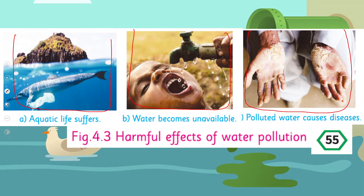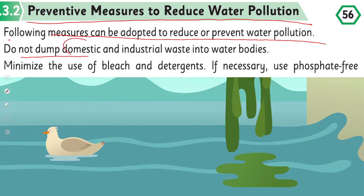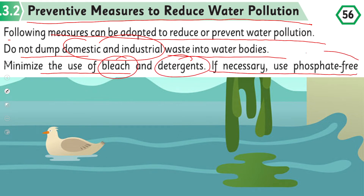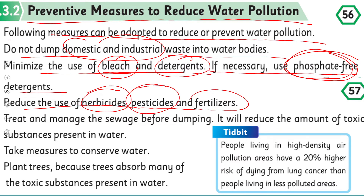So here you can see in this picture water pollution — jiski wajah se bohut hi bura marine life ke upar asar hai, hamaare saaf paani ki kami hone par. Preventive measures to reduce water pollution: kis tarike se hum paani ki pollution ko kam kar sakte hain? The following measures can be adopted: do not dump domestic and industrial waste into the water bodies; minimize the use of bleach and detergents; if necessary, use phosphate-free detergents; reduce the use of herbicides, pesticides and fertilizers.